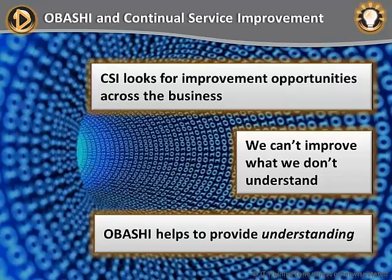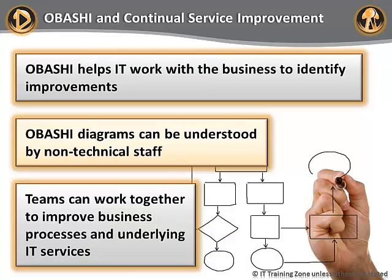The continual service improvement stage of the ITIL service lifecycle looks for improvement opportunities related to services, people, processes, structure — anything. It's well accepted that we need to understand something before we can improve it, and Obashi helps to provide that understanding of the organization. Obashi helps IT to work with the business and identify improvements. The diagrams it produces are easy to understand and don't need any technical knowledge, so people from different teams can work together and improve business processes and the IT that supports them.